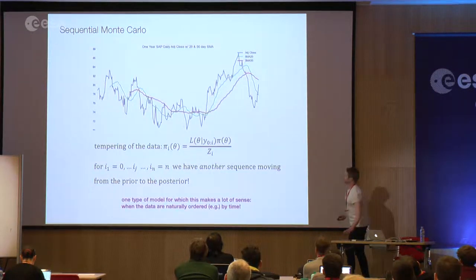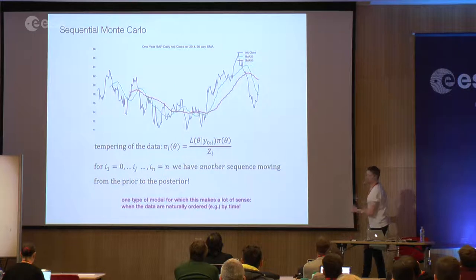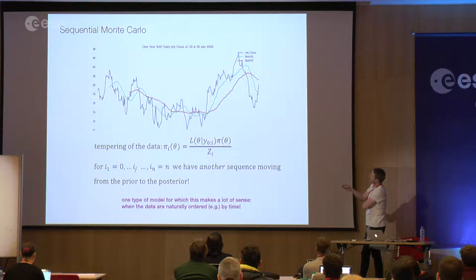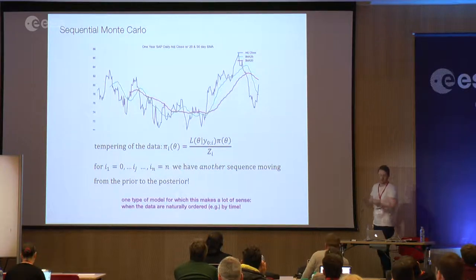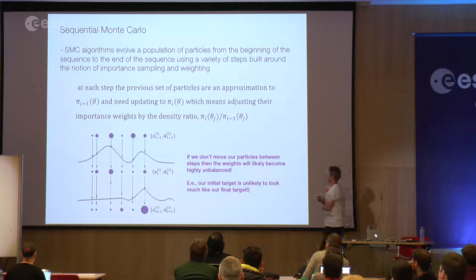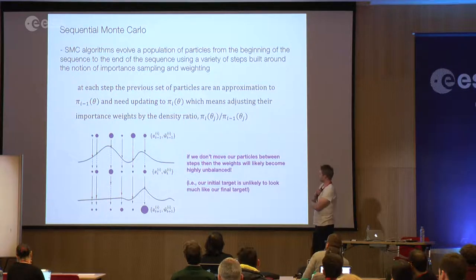One situation where tempering on the data makes more sense than the thermodynamic path is when data has a natural ordering — like a financial time series ordered by physical time. In that case, structuring the sequence from the earliest to the latest data point in your temporal window makes natural sense.